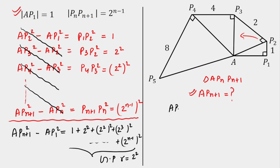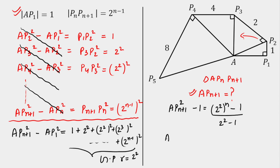Solving for AP(n+1): AP(n+1)² − 1 equals the sum of the GP, which is 1 × (4^n − 1) / (4 − 1) = (4^n − 1)/3. Therefore AP(n+1)² = (4^(n+2) − 1) / 3, giving AP(n+1) = √((4^(n+2)) / 3) as the final expression for this side.